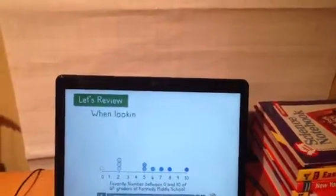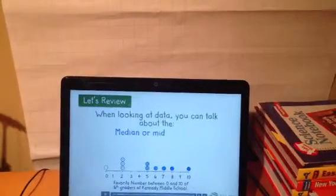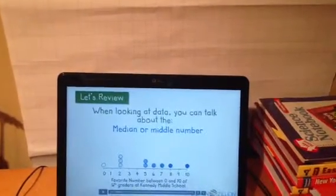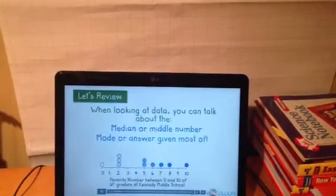Let's review. When looking at data, you can talk about the median or middle number. In this data set, the median is 5, or the mode, or the answer given most often. In this case, it's a 2.